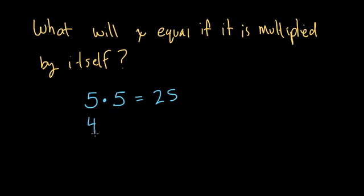And then if I take 4 and multiply it by itself, I get 4 times 4, or 16. If I take 3 and multiply it by itself, I get 9. If I take 2 and I multiply it by itself, I get 4.